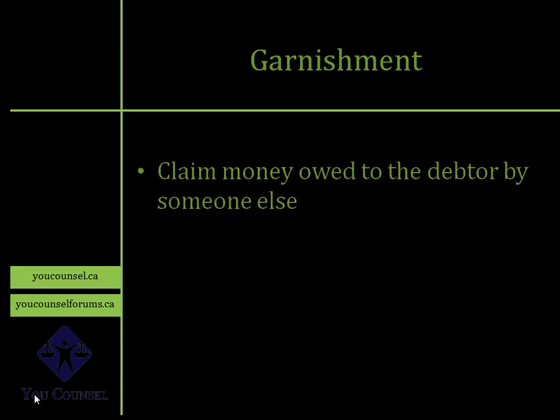So, Garnishment — what is it? Garnishment is where you claim money that is owed to your debtor by someone else. For example, if you got a judgment against John and someone else owes money to John, you go after that third party and get a court order asking them to give you the money that they owe to John — not to give it to John, but to give it to you. That's called Garnishment.